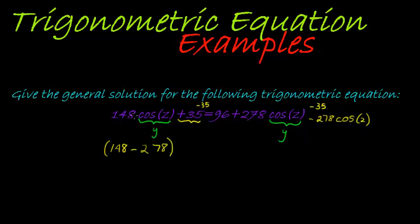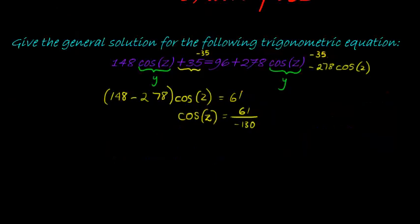So I'm subtracting, I had 148, now I'm subtracting 278 of them, and whatever answer I get there is how many cosines I'm going to have on the left-hand side. On the right-hand side, I had 96 and I subtracted 35, does that give me 61, I think. So eventually, I have that cos(z) is equal to, and now I just divide with whatever this simplifies to. It looks like it simplifies to negative 130, so I've got 61 over negative 130. And there we go, I've got my cos ratio equal to a constant, and from here on it's actually very easy.